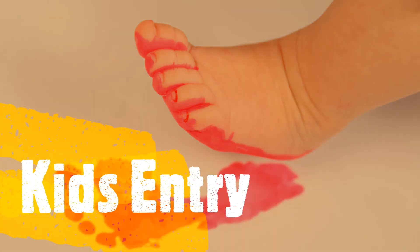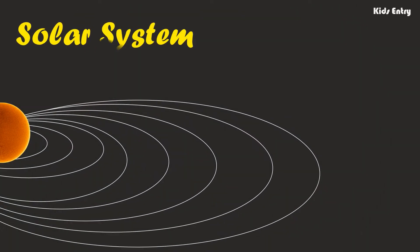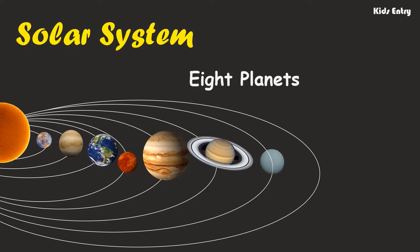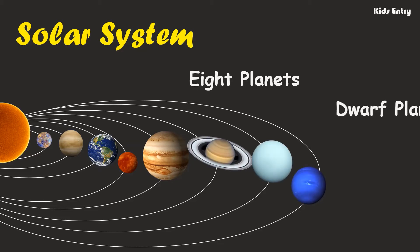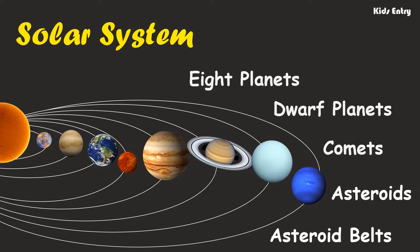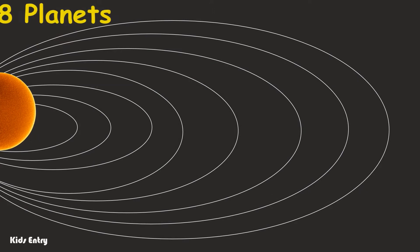This is the solar system: the collection of eight planets and their moons in orbit around the Sun, together with smaller bodies in the form of dwarf planets, comets, asteroids, and asteroid belts. Let's start to see details about the eight planets.